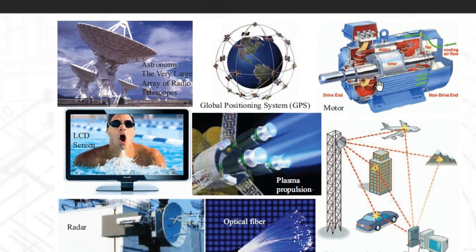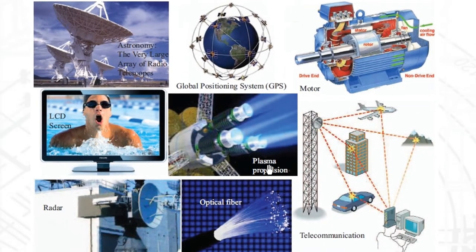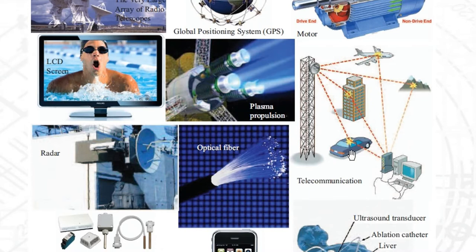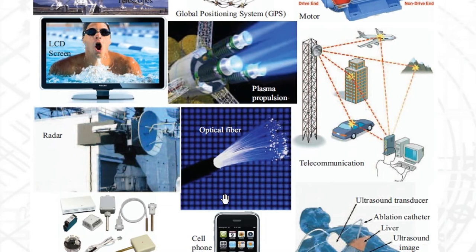Electromagnetics is used for motors, and this is becoming even more important with the advent of electric vehicles. It's used in various display technologies — light is a type of electromagnetic wave. There are new applications in propulsion, in research and high-energy physics, and in telecommunications. Everyone has a cell phone in their pocket that has several important electromagnetics components. It also forms the basis of high-speed data communications, not just wireless but through optical fibers as well.